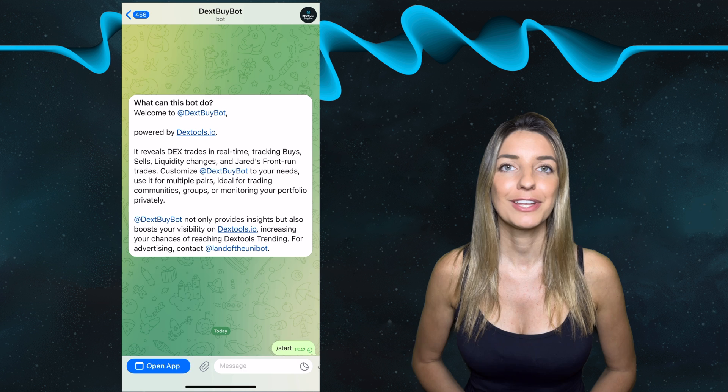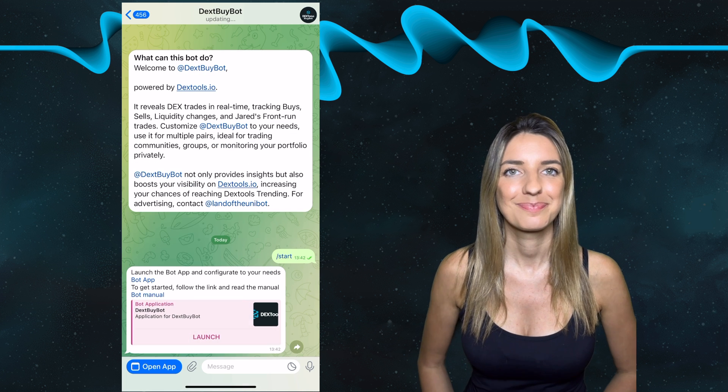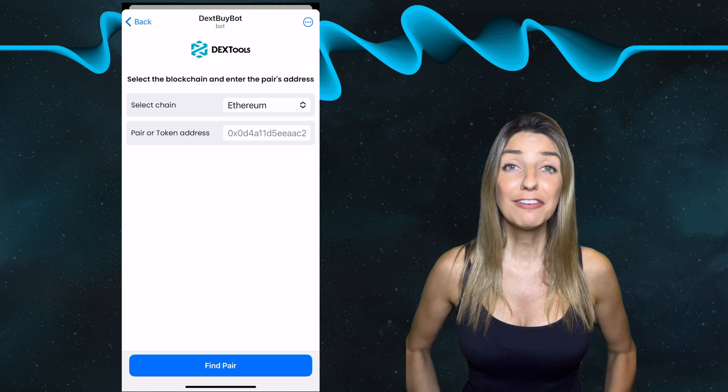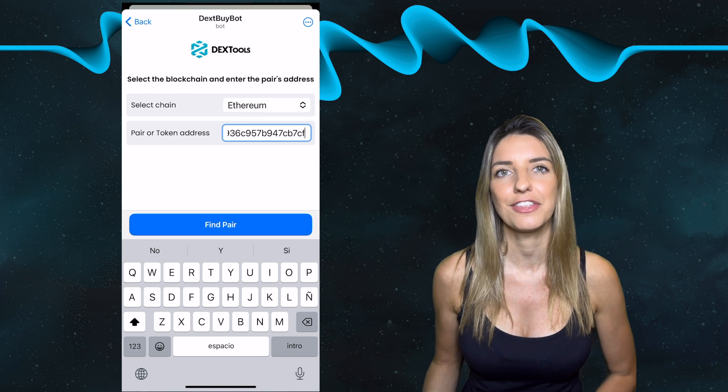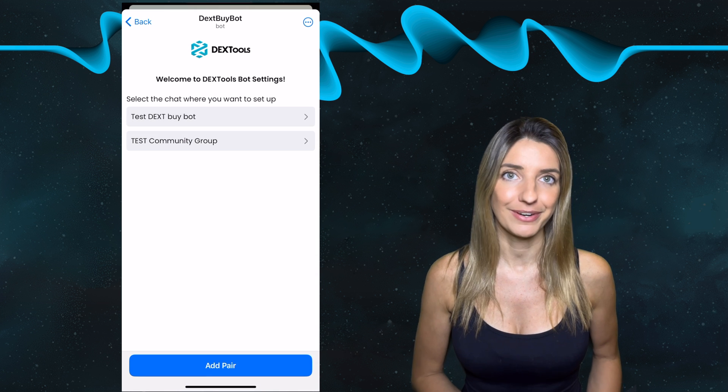Then go to the bot and write command start and open the app here. After selecting the chain, copy the pair or contract address of the token you want to add and enter it here in this field. Now simply choose the pair and click on it to configure it.